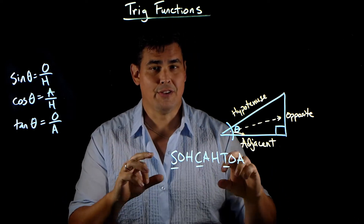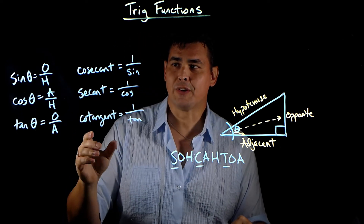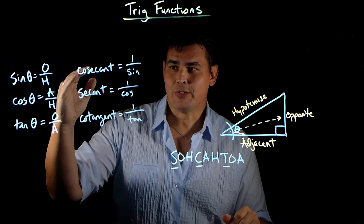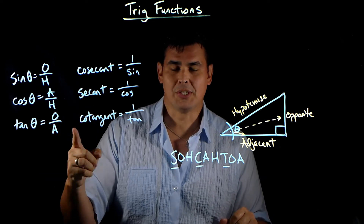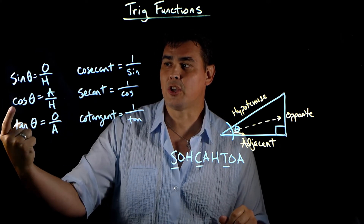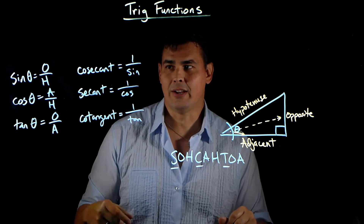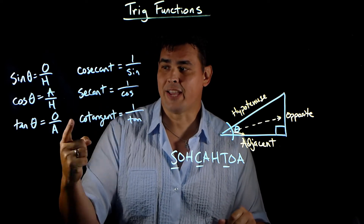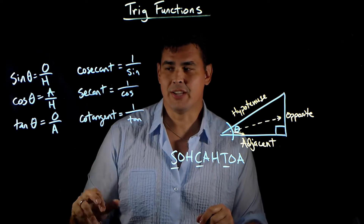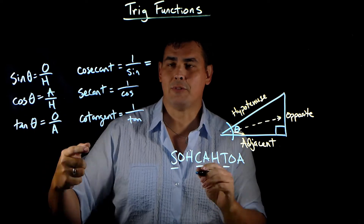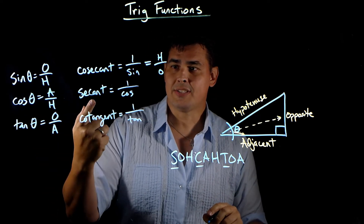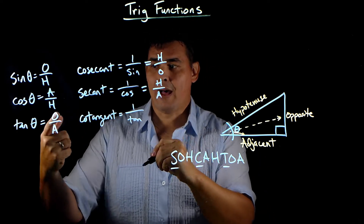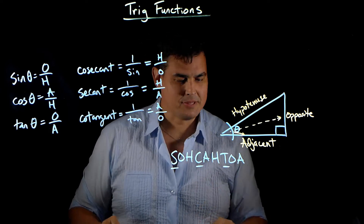There are also reciprocal functions: cosecant, secant, and cotangent. Tangent goes with cotangent, and cosecant comes first — it's a little weird because it's opposite to the sine/cosine order. Cosecant is one over sine, secant is one over cosine, and cotangent is one over tangent. So instead of opposite over hypotenuse, cosecant is hypotenuse over opposite. Secant, instead of adjacent over hypotenuse, is hypotenuse over adjacent. Cotangent, instead of opposite over adjacent, is adjacent over opposite.